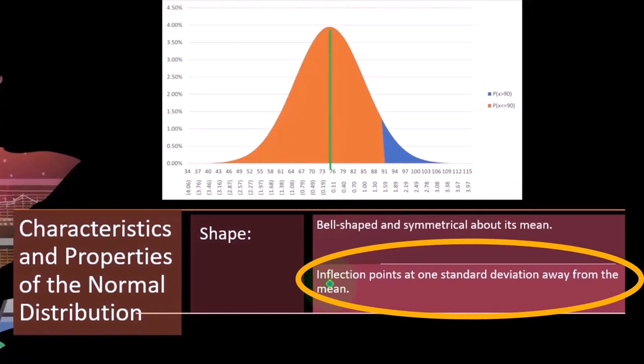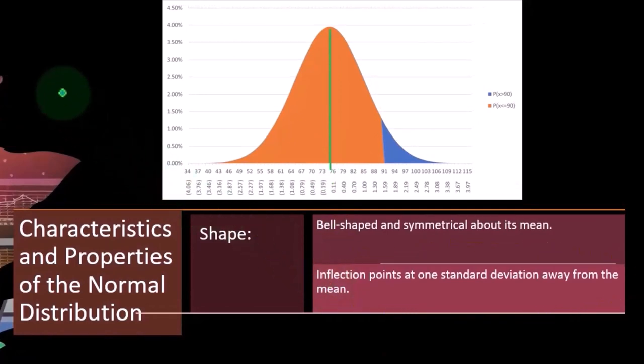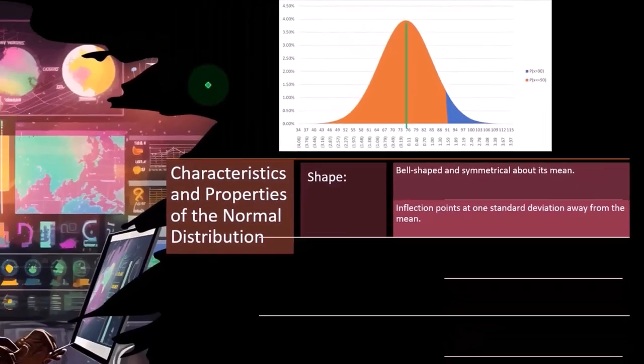But here we have the mean right in the middle, and then like if you folded the page in half, it would be folding right on top of each other because it's symmetrical around that middle point.